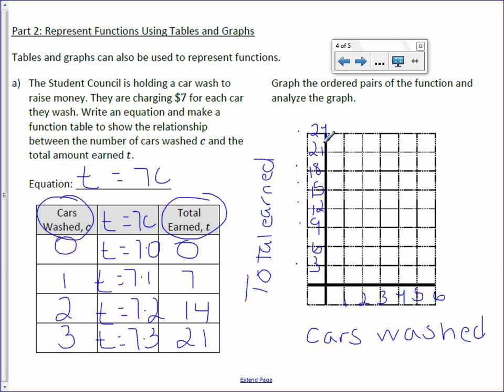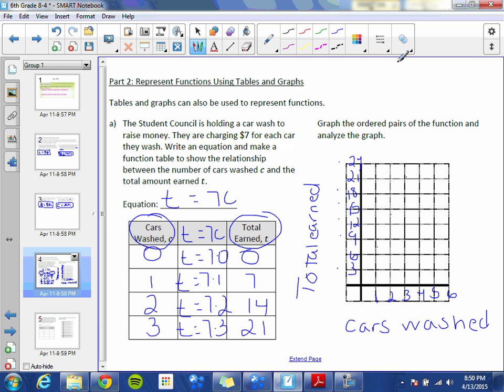From here, we plot our points: 0, 0; 1, 7 is about here; 2, 14; and 3, 21.